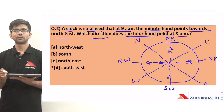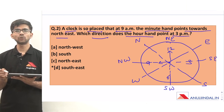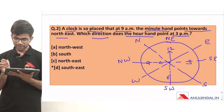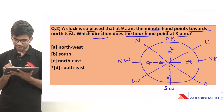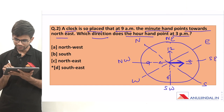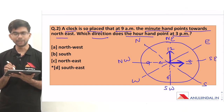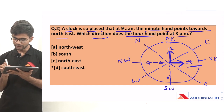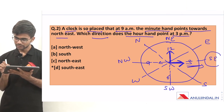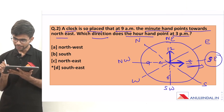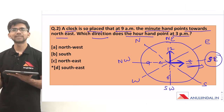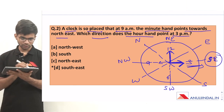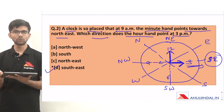At 3 pm, the hour hand will be at 3 and the minute hand will be at 12. Based on our direction mapping, the hour hand at 3 is pointing towards south east. So the correct option is option D, south east.